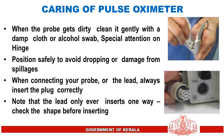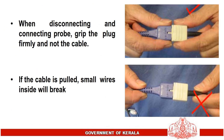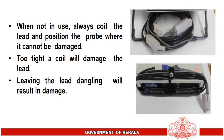Care of the pulse oximeter: when the probe gets dirty, clean it gently with a damp cloth or alcohol swab, with special attention to the hinge position. Store safely to avoid dropping or damage from spillages. When connecting the probe or lead, always insert the plug correctly — the lead only inserts one way; check the shape before inserting. When disconnecting and connecting the probe, grip the plug firmly and not the cable, as pulling the cable will break the small wires inside. When not in use, always coil the lead and position the probe where it cannot be damaged. Too tight a coil will damage the lead; leaving the lead dangling will also result in damage.